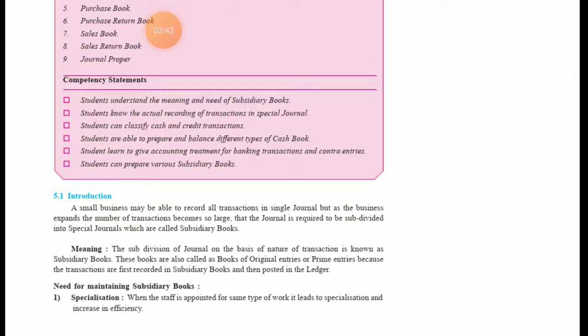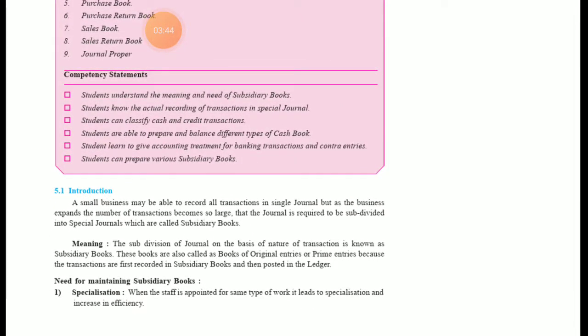Now, the meaning of subsidiary books. This journal — the prime book, the original book — is subdivided into many types of books. Those are known as subsidiary books. The subdivision of the journal on the basis of the nature of transaction is known as a subsidiary book. These books are also called books of original entries or prime entries, because transactions are first recorded in the subsidiary books and then posted to the ledger.